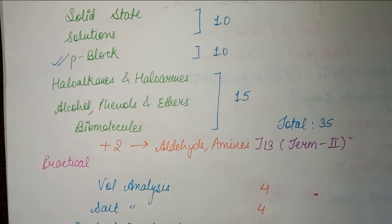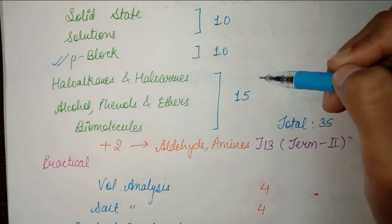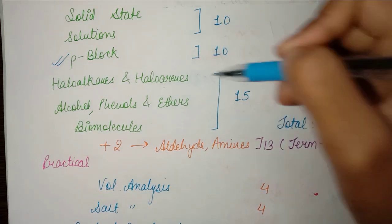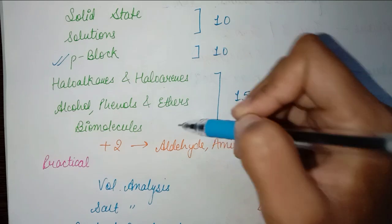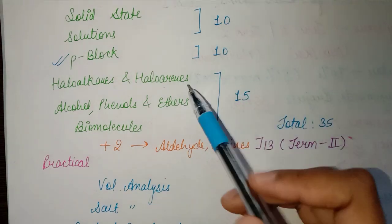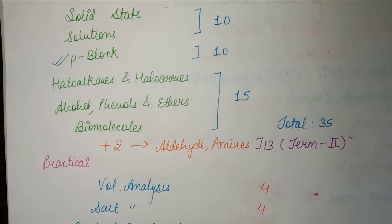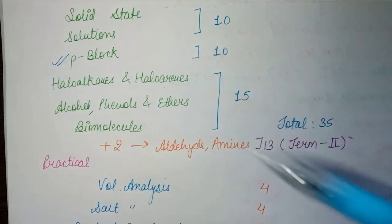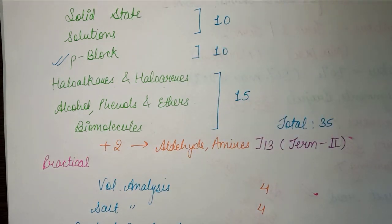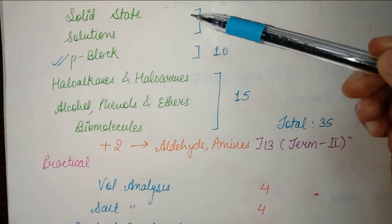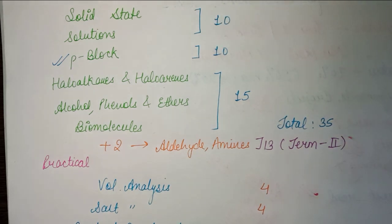Organic chemistry and Biomolecules together cover 15 marks — generally distributed as 5-5-5. More questions come from the organic chemistry chapters, and slightly fewer from Biomolecules because that chapter is quite easy. In Solid State and Solutions, mostly numericals come, so practice the one-mark numericals from these chapters.